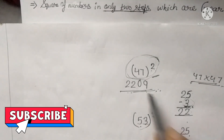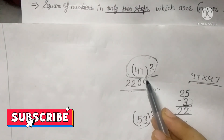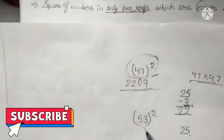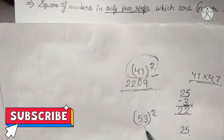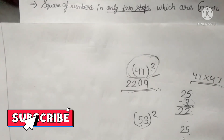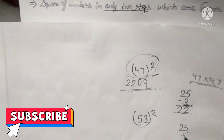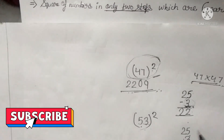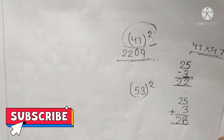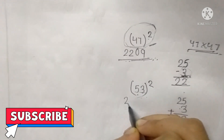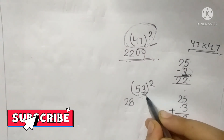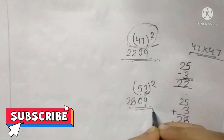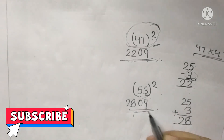In the previous example with 47, which is 3 less than 50, we subtracted 3 from 25. But here with 53, which is 3 more than 50, we are going to add 3 to 25, which gives 28. So we write 28. And again, the square of 3 is 9, so we write it with a leading 0 as 09. So the square of 53 is 2809. You can verify that in the calculator as well.